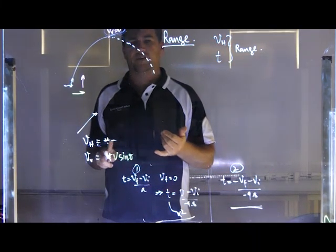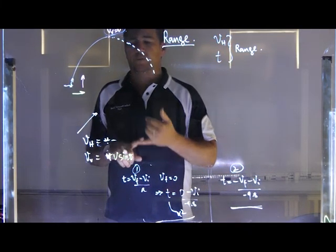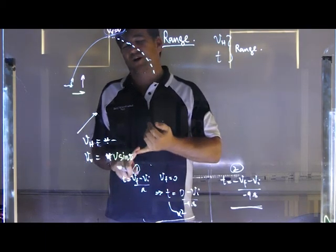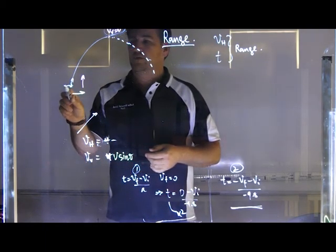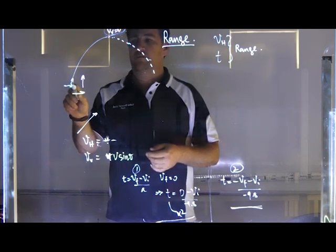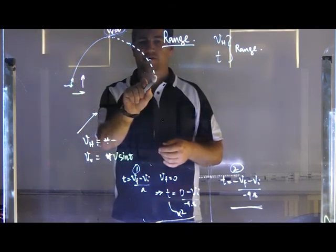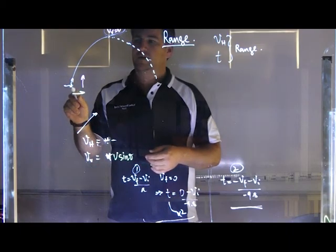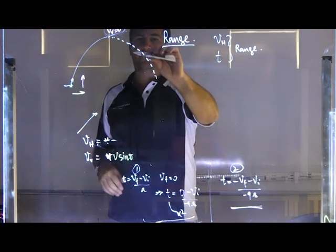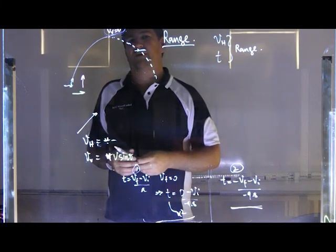There's various factors that affect the range. We're ignoring wind drag, but things like launch height. So if we were to launch this one from this height and it lands ground height again, if we were to say the ground's up here now, then it's going to be a shorter range.